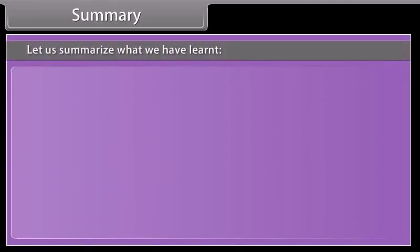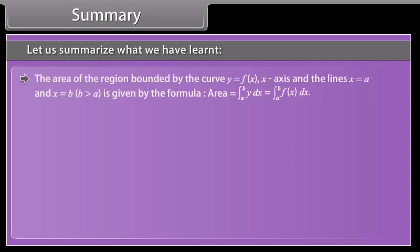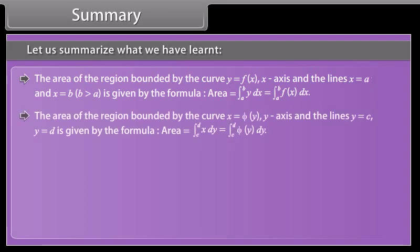Let us summarize what we have learned. The area of the region bounded by the curve y = f(x), the x-axis, and the lines x = A and x = B, where B > A, is given by: area = ∫ from A to B of y dx = ∫ from A to B of f(x) dx. The area of the region bounded by the curve x = f(y), the y-axis, and the lines y = C and y = D is given by: area = ∫ from C to D of x dy = ∫ from C to D of f(y) dy.